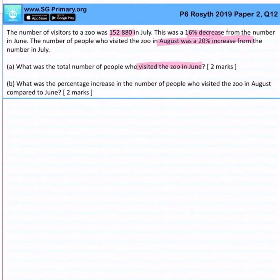Let's look at part (a). In June we don't know what that is yet, but we know that in July it is 152,880 and there is a 16% decrease from June. So if you want to find out June...